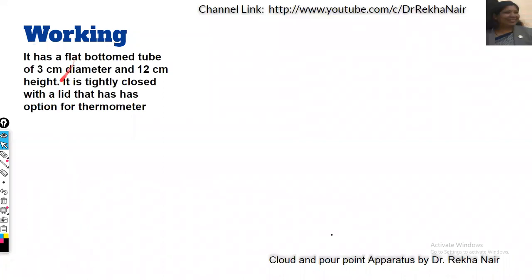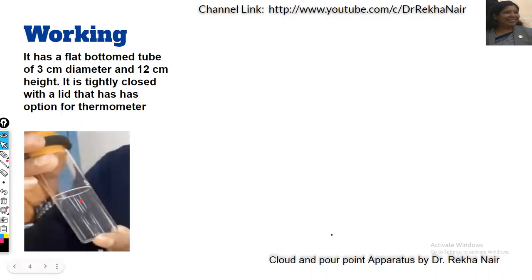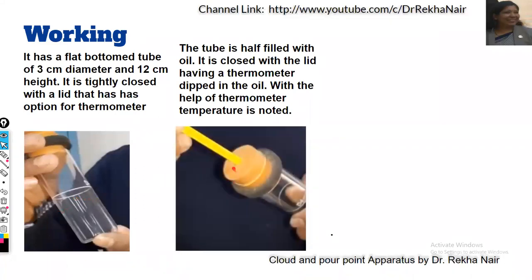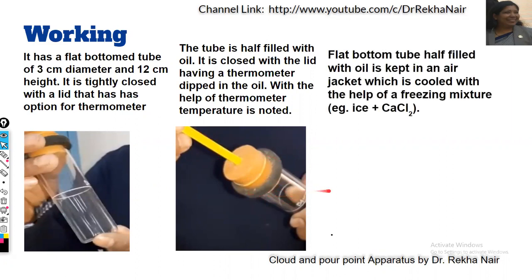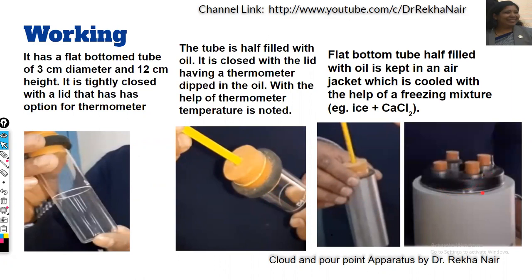Let us discuss the working. It has a flat bottom test tube of about 3 cm diameter and 12 cm height, tightly closed with a lid which has an option for the thermometer. The tube is half filled with oil and closed with the lid having a thermometer dipped in the oil. The temperature is noted with the help of the thermometer. This flat bottom test tube is kept in an air jacket, which is cooled with the help of a freezing mixture — ice plus calcium chloride.